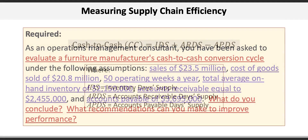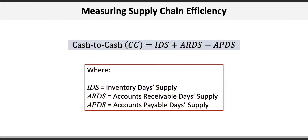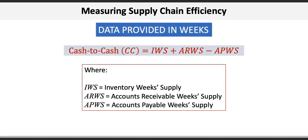The basic formula for the cash-to-cash conversion cycle, or CC, is equal to IDS plus ARDS minus APDS, where IDS is the inventory days supply, ARDS is the accounts receivable days supply, and APDS is the accounts payable days supply. Now the data in this question is provided in weeks, so we're going to convert these variables to represent weeks instead of days.